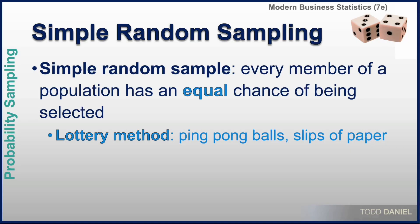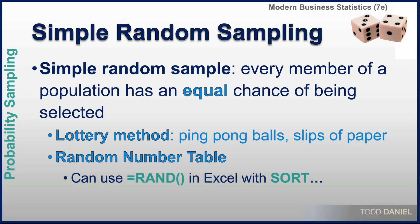We can also do random sampling using Excel or other statistical software. In Excel, we will use the RAND function. The RAND function can be used in Excel with the SORT function in order to randomize a list of names and bring certain names to the top.